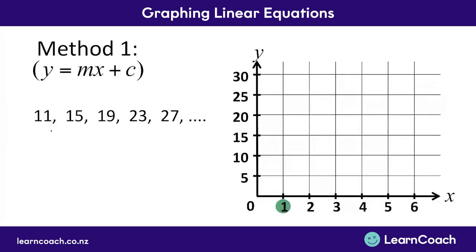First of all, the first term in our sequence when x was 1 was 11. So we go to 1, we go to 11, and we plot a point with an x. Then we do the same with 15, that's the second term in our sequence, and it goes up to 15. The third term is 19, so we plot that point. The fourth term, 23, and the fifth term is 27.